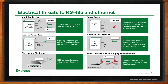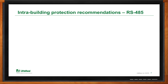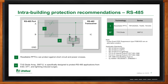For RS-485 intra-building protection, a resettable PPTC or PolySwitch — positive temperature coefficient — can protect against both short circuit and power crosses. For voltage, the TVS diode array SM712 is specifically designed for RS-485 and protects against electrostatic discharge, electrical fast transients, and some lightning-induced surges. As alternatives, you can use a Pulse Guard ESD suppressor type PGB or XGD. These all help you align to IEC, ITU, GR, and UL standards.